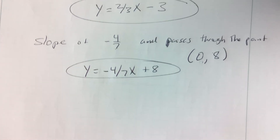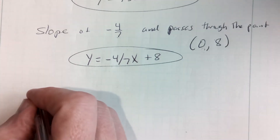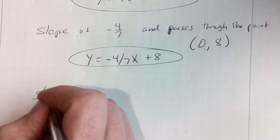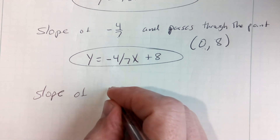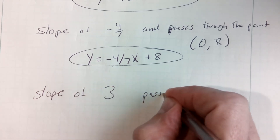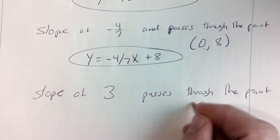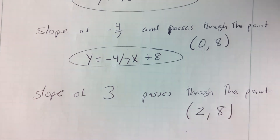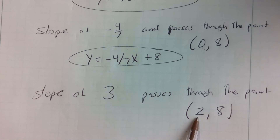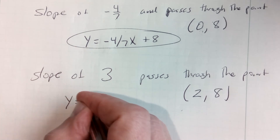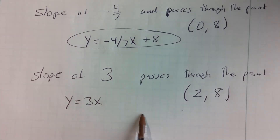Now they might make it a little bit harder. Let's say you have a line that has a slope of 3 and passes through the point (2, 8). The x value is not 0, so we do not have the y-intercept — we need to find it. We do know the slope. It gave us the slope. So we know to write y equals 3x plus or minus something, depending on what the y-intercept is.